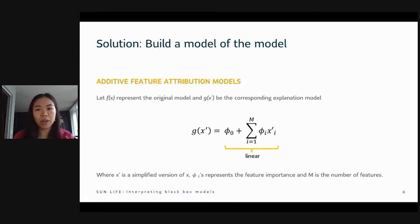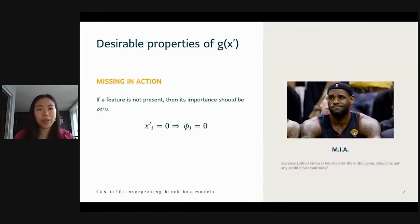Now, there are three properties that we want of g of x. The first one is what I call missing in action. And what it means is if a feature is not there, then its importance should be zero. And the analogy I like to use is in sports, if a team member, let's say LeBron James, is not playing during a game, he's benched, but his team wins, he shouldn't get any credit for that win. That's what this property is saying. If a feature is not helpful in the performance of the model, it should get no credit.